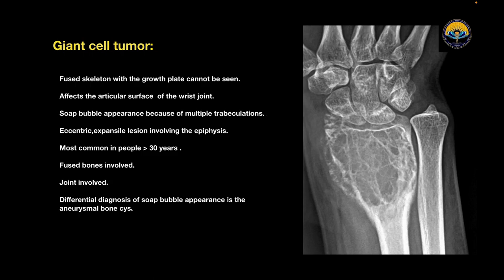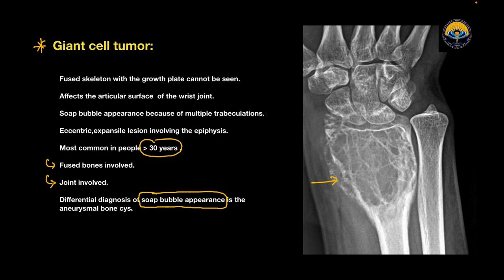Next, let's talk about the giant cell tumor. Giant cell tumors are locally aggressive and rarely malignant tumors, typically found at the end of long bones — in the region around the closed growth plate, extending into the epiphysis and to the joint surface. They look like soap bubbles because of multiple trabeculations. These are eccentric expansile lesions involving the epiphysis, most commonly seen in age more than 30 years. About 60 to 65% of giant cell tumors are seen in the distal femur and proximal tibia.